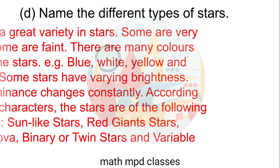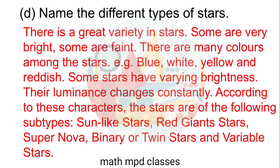D. Name the different types of stars. Answer: There is a great variety in stars. Some are very bright, some are red. There are many colors among stars — blue, white, yellow, and reddish. Some stars have varying brightness whose luminance changes constantly. According to these characteristics, stars are of the following subtypes: sun-like stars, red giant stars, supernova, binary or twin stars, and variable stars.